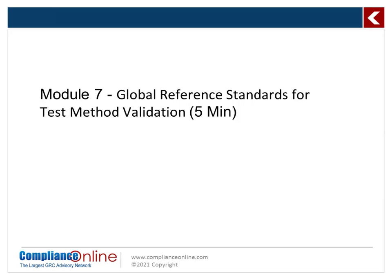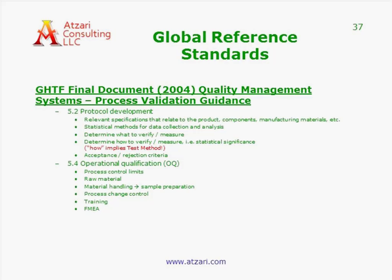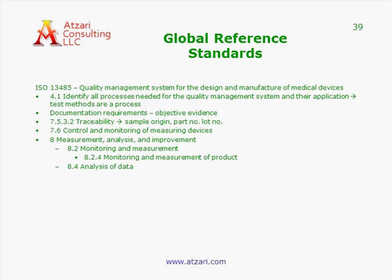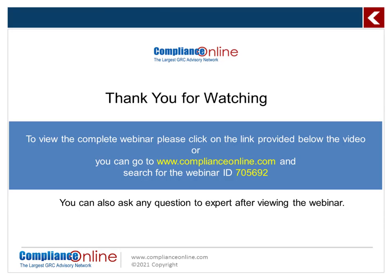Another excellent standard — actually preferred — is the global harmonization standard for process validation guidance, which gives you almost everything you need for validating not only a process but also a test method. Remember: the counterintuitive logic is that you're measuring the variation of the measurement system as opposed to the process. There is also ISO 13485, which, even though it's for quality management systems, talks about traceability, control of measuring devices, measurement, analysis, and improvement — all of which applies to your test methods.